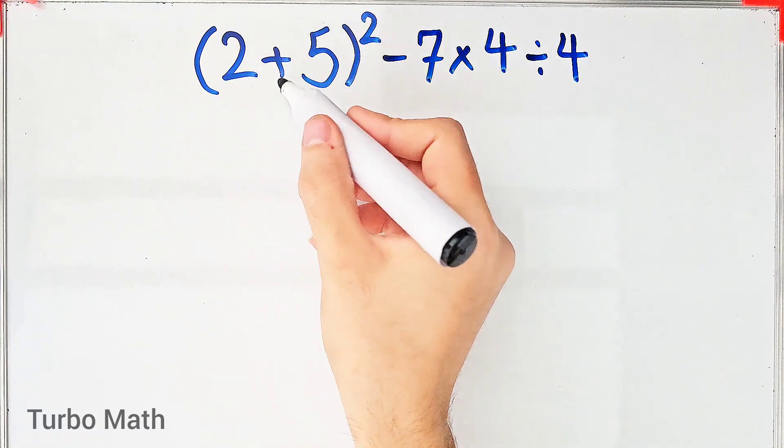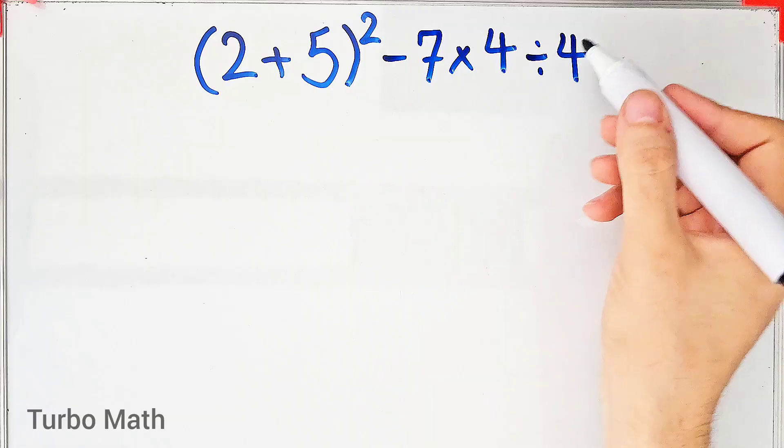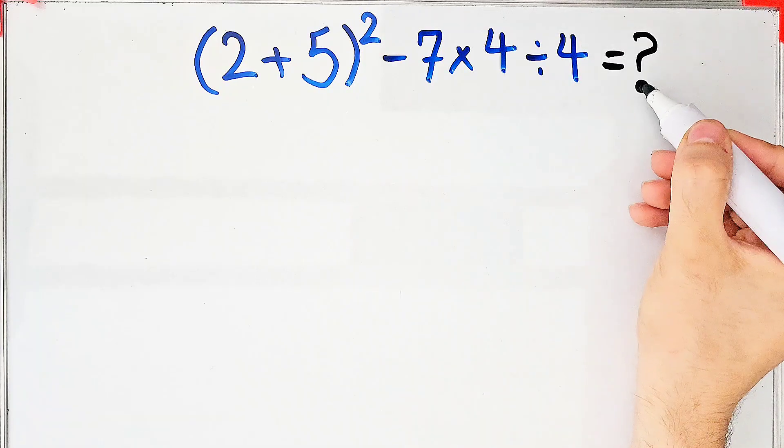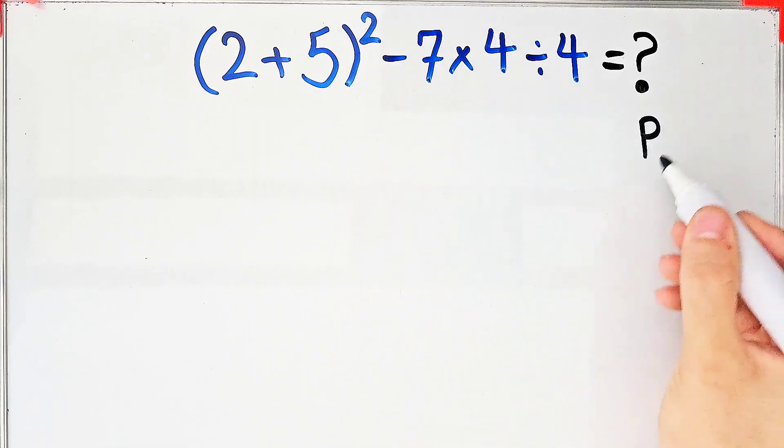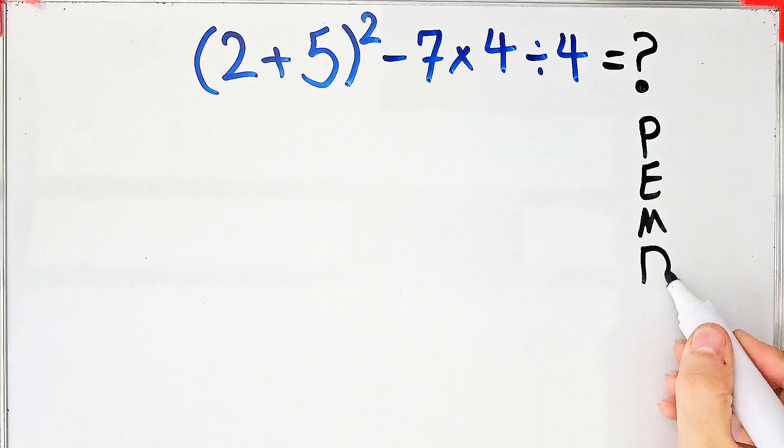Hi friends, welcome to Turbo Math channel. (2+5)² - 7×4÷4. What is the answer to this question? To solve this question, we need to follow the order of operations, which is PEMDAS. PEMDAS shows the priority of the mathematical operations.